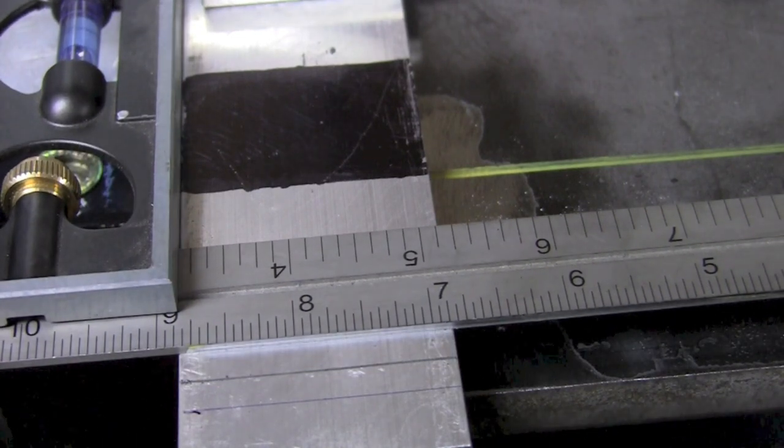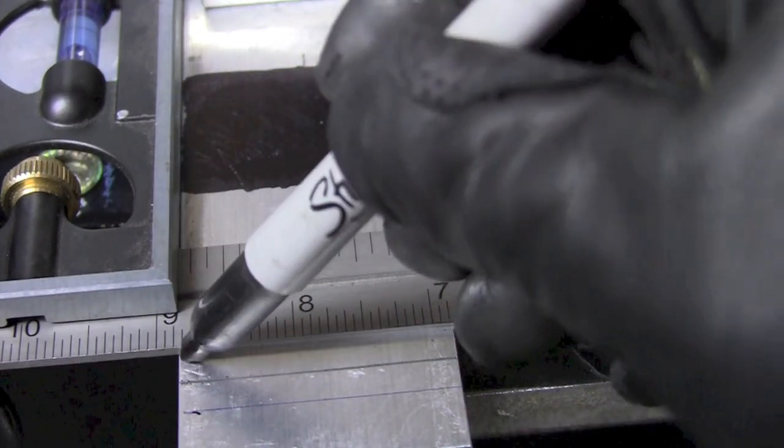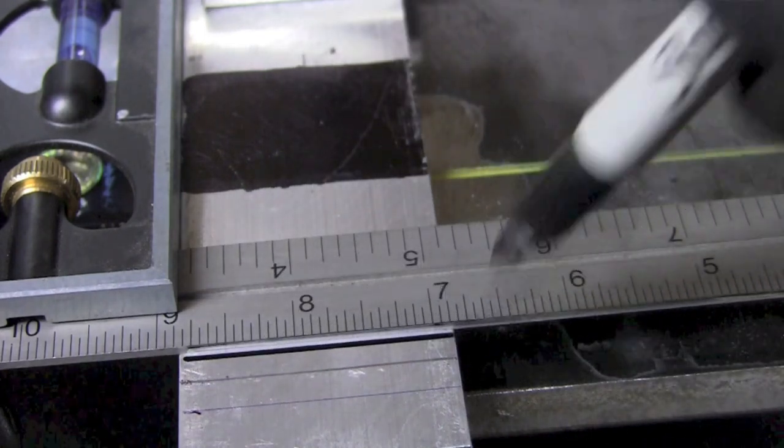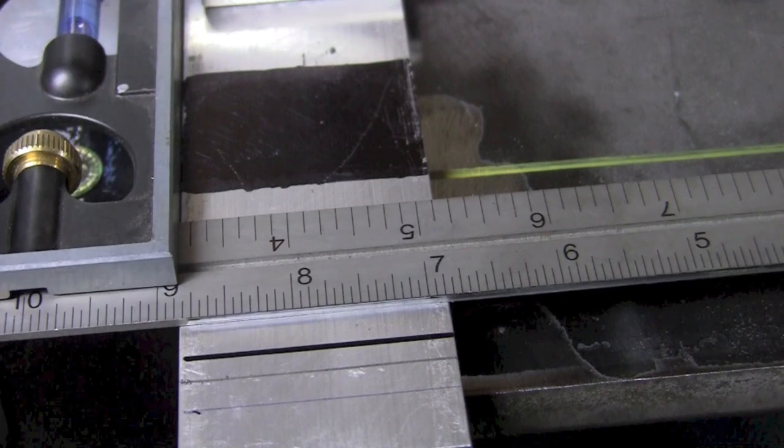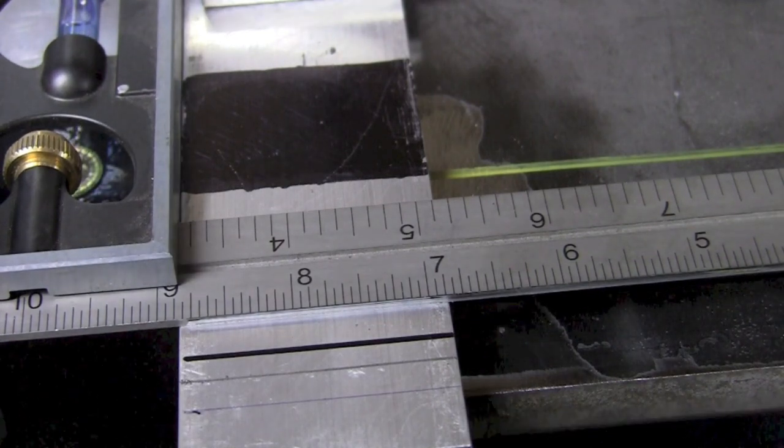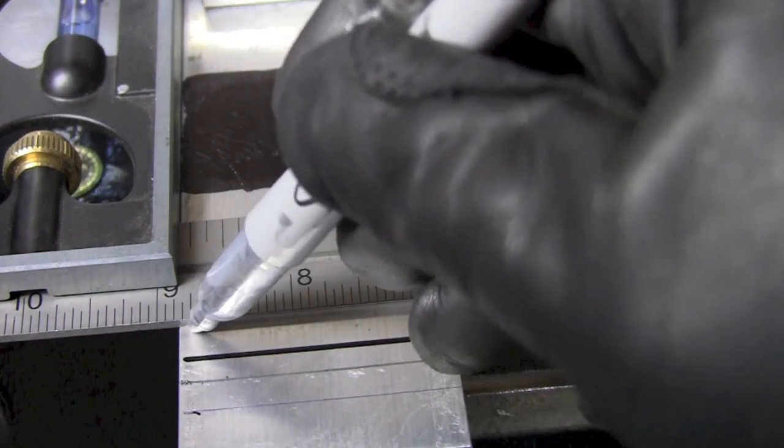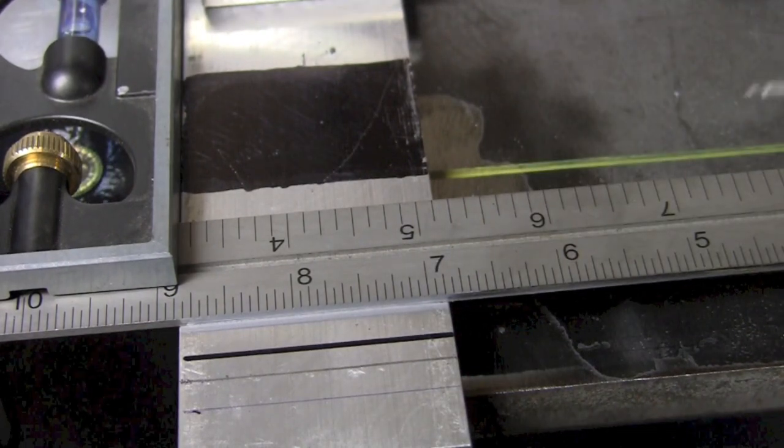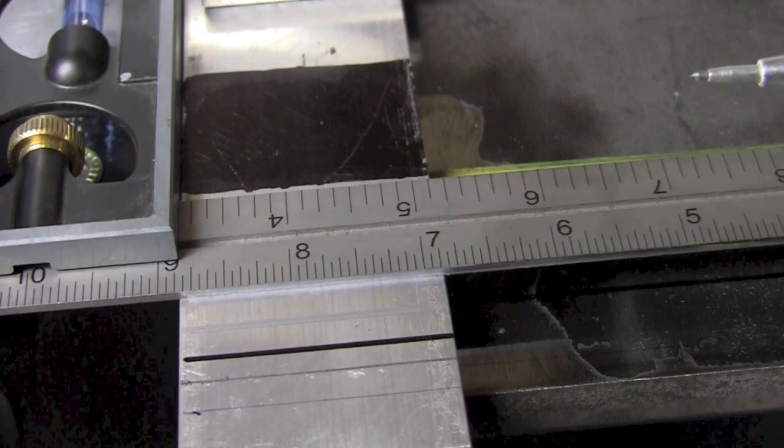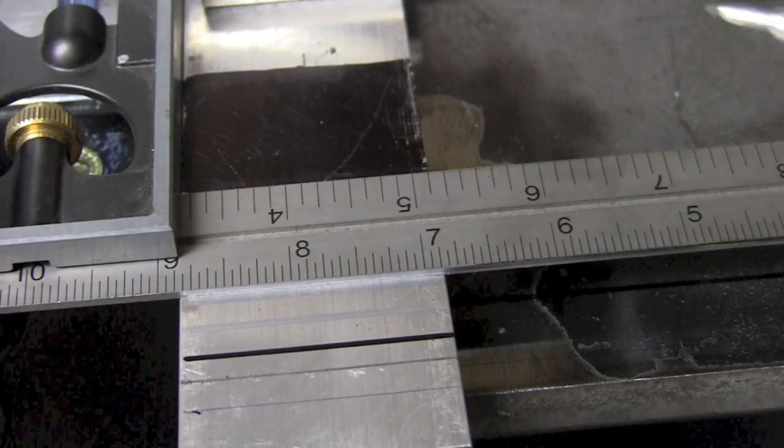The next item up is going to be that black Sharpie marker, and that works real well on the aluminum, but once again still not a real fine line, so it doesn't make the best layout tool but does work okay. That silver contrasting ink that looked great on that hot rolled plate before doesn't do much for me over here on the aluminum. Kind of tough to see.